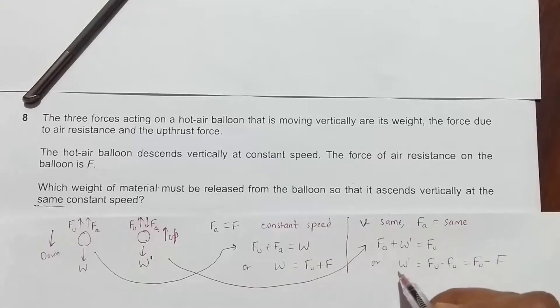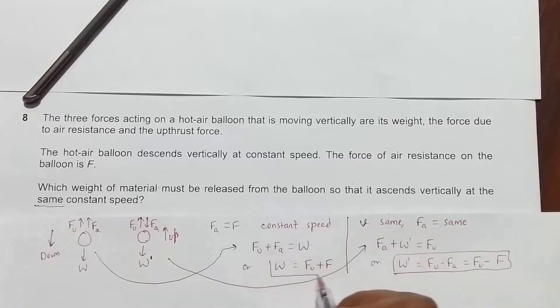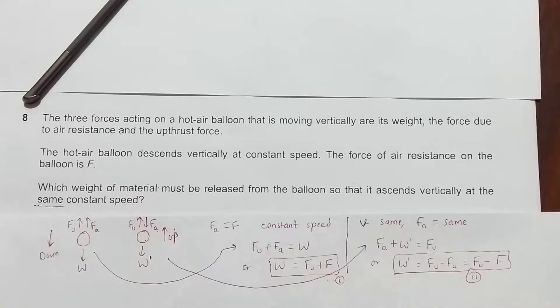If I subtract equation number two from one, it will give me W minus W prime equals F_U plus F_A minus F_U plus F_A. If I cancel these two, it will be twice F_A here.